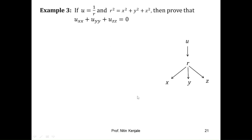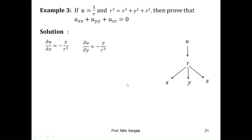In the next example, u = 1/r and r² = x² + y² + z², and we are asked to prove that uxx + uyy + uzz = 0. From the previous example, we already established: ∂u/∂x = −x/r³, ∂u/∂y = −y/r³, and ∂u/∂z = −z/r³.